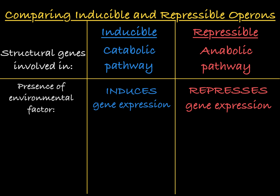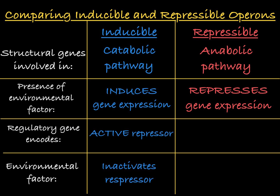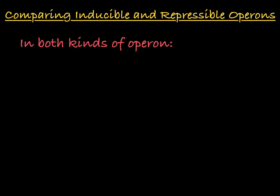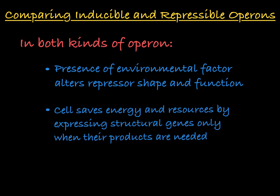The difference in these types of operons is in the product of the regulatory gene. In an inducible operon, the regulatory gene creates an active repressor that must be inactivated by the presence of an environmental factor. In a repressible operon, the regulatory gene creates an inactive repressor that is activated by the presence of the environmental factor. In both cases, the environmental factor acts as a change agent, leading to a structural change in the repressor to alter the level of expression of the structural genes. Both scenarios allow the cell to save energy and resources by expressing the structural genes of the operon only when their protein products are needed.